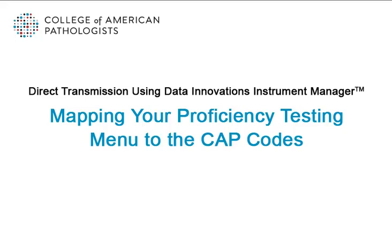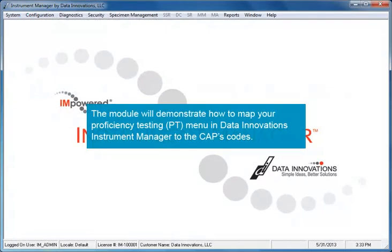Welcome to the College of American Pathologists Direct Transmission eLearning Module: Mapping Your Proficiency Testing Menu to the CAP Codes. This module is intended for laboratories planning to use Data Innovation's Instrument Manager to transmit proficiency testing results directly to the CAP. The module will demonstrate how to map your Proficiency Testing, or PT, menu in Data Innovation's Instrument Manager to the CAP's codes.